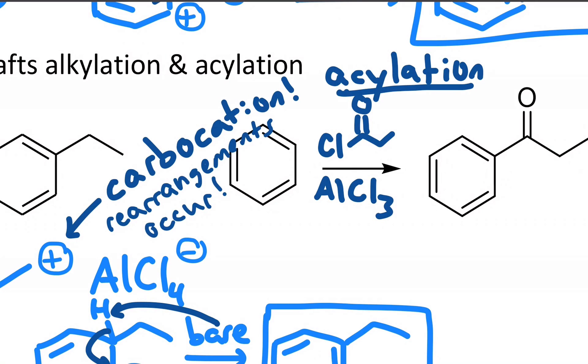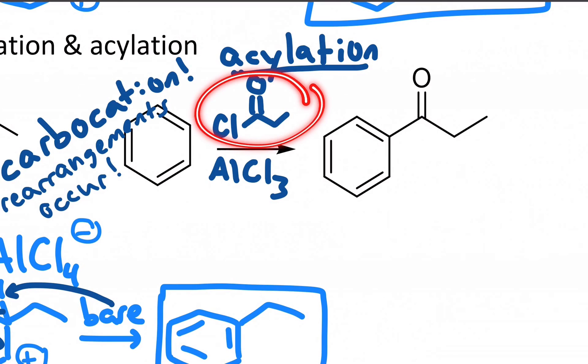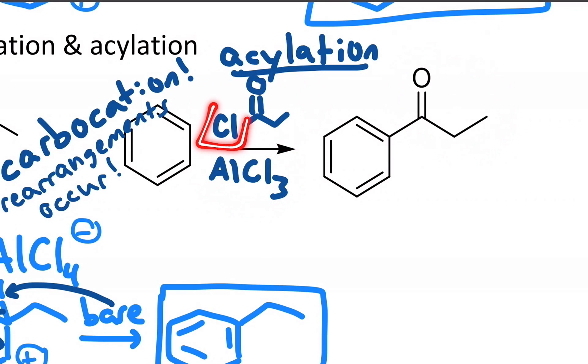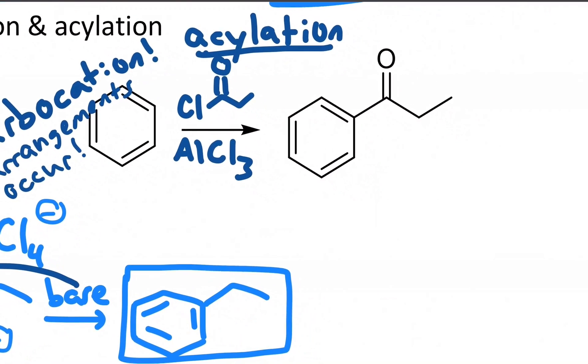you could do a reaction such as that, where I have an acid chloride and a Lewis acid, and I attach a new carbon group that looks like everything without the halogen, the chloride in this case.